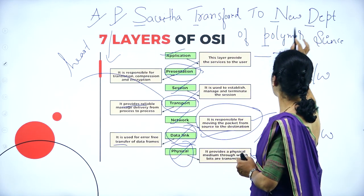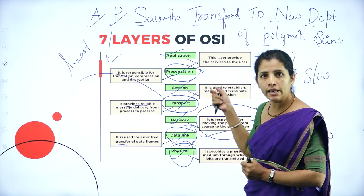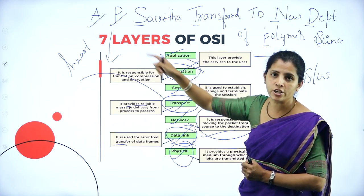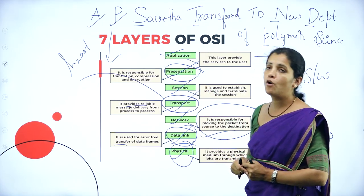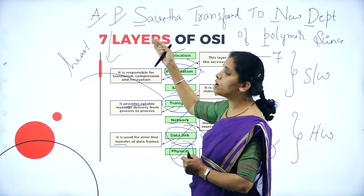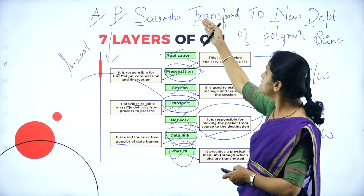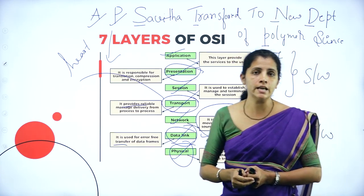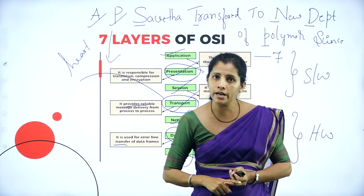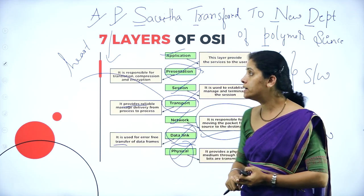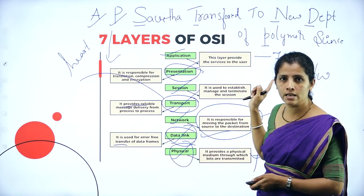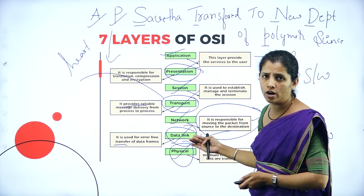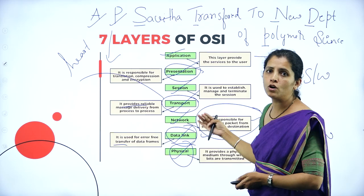From the mnemonic, the seven letters map as follows: 1-Application, 2-Presentation, 3-Session, 4-Transport, 5-Network, 6-Data Link, 7-Physical. You must write the layers in this same order and cannot misplace them.